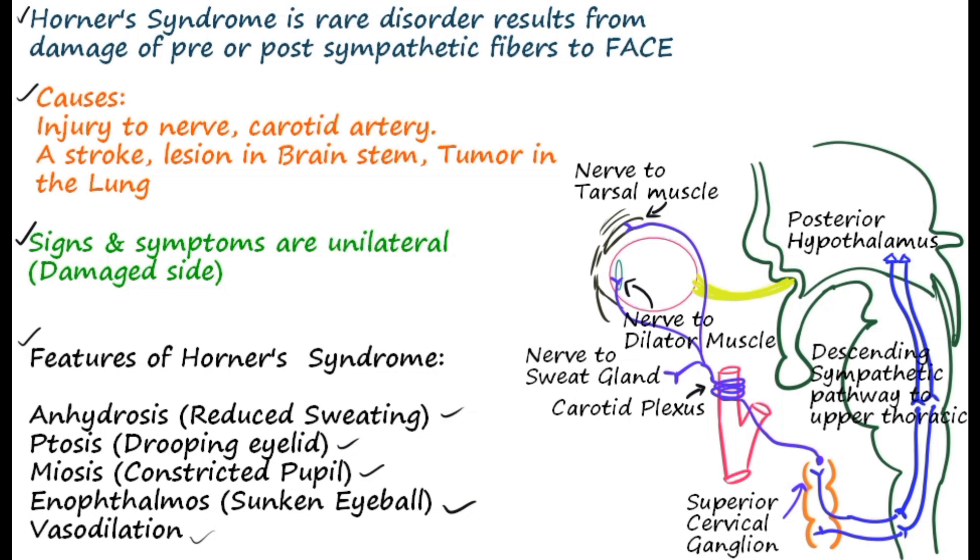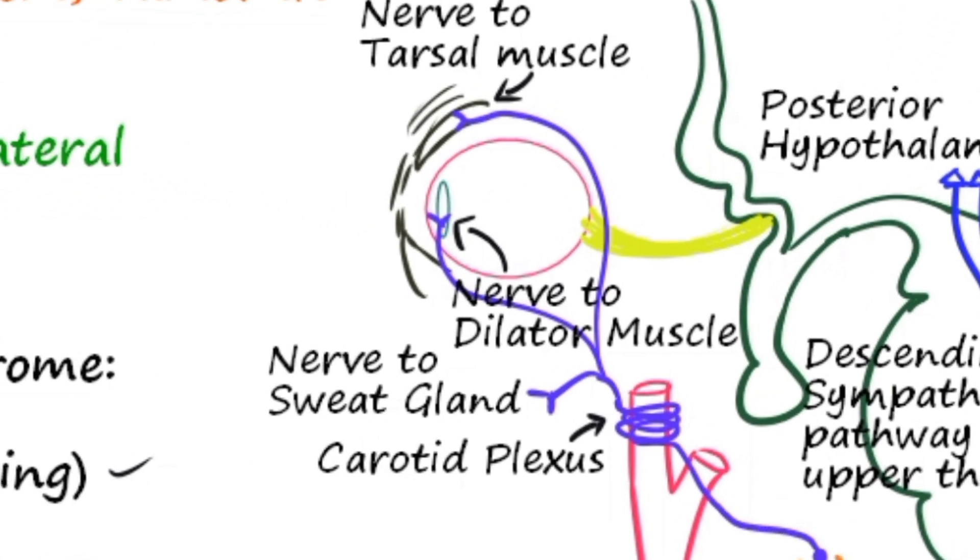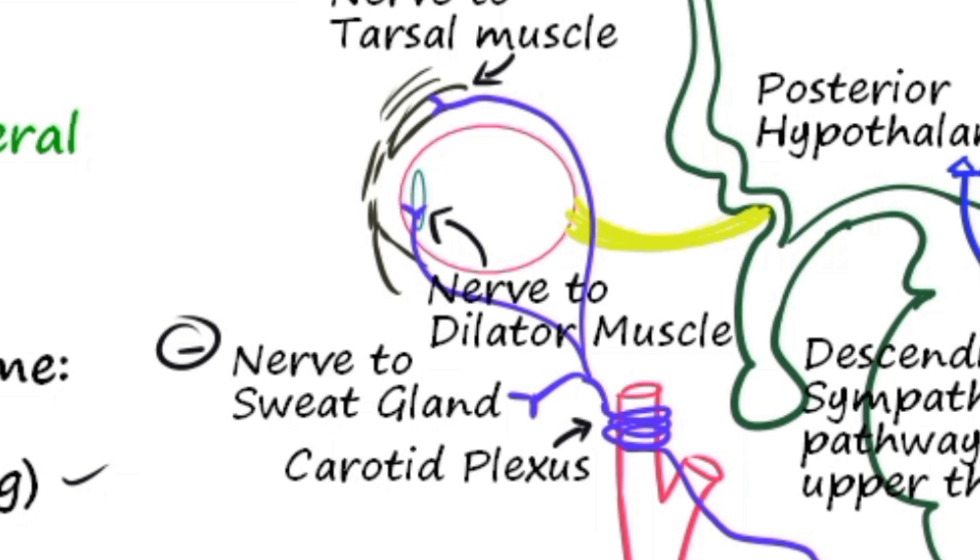Vasodilation occurs because of reduced sympathetic tone. Finally, these clinical features are seen because of disruption of the sympathetic fiber innervation.